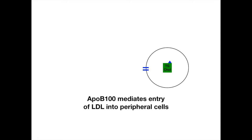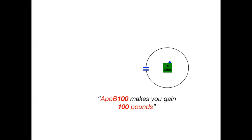The dirty medicine mnemonic is that APO-B100 makes you gain 100 pounds. APO-B100 is what puts the fat — cholesterol, triglycerides, lipids — from your liver into the peripheral cells. So APO-B100 interacts with the LDL receptor and causes endocytosis of LDL along with its stored lipid content into peripheral cells, making you gain 100 pounds.